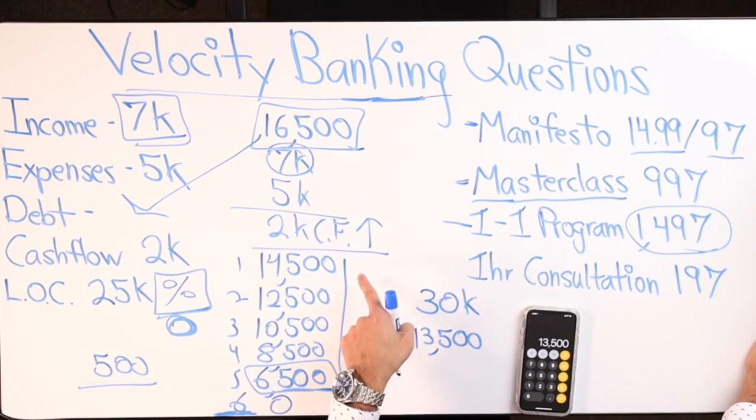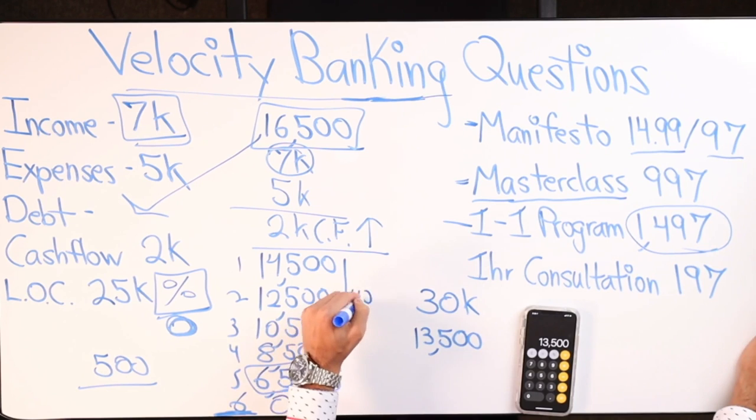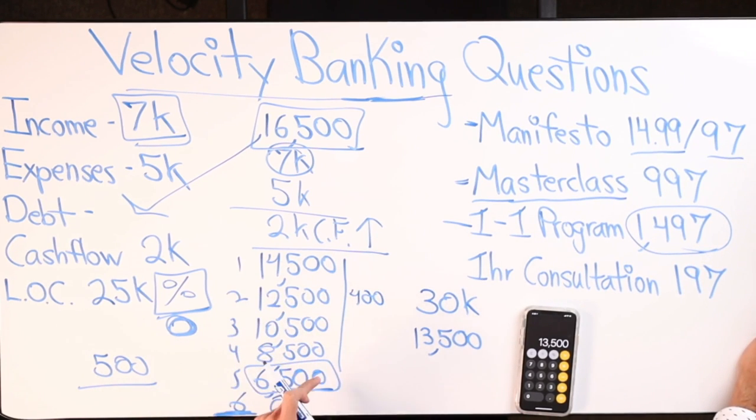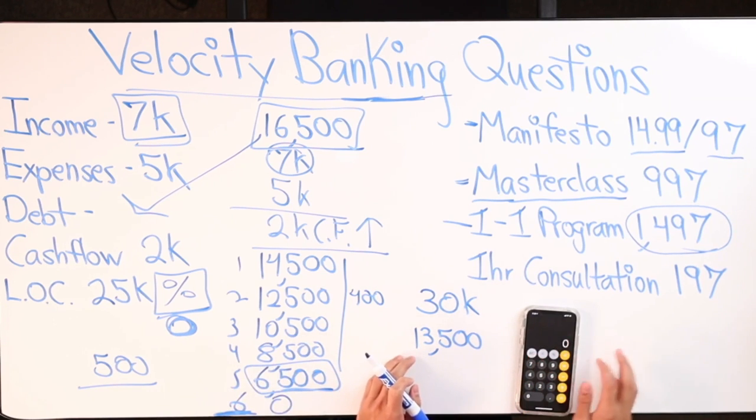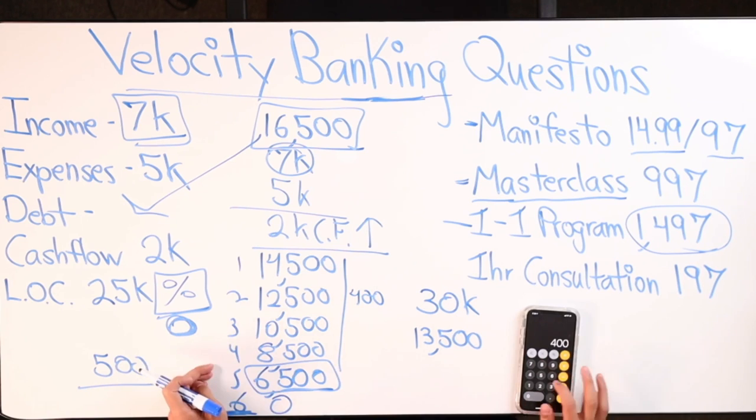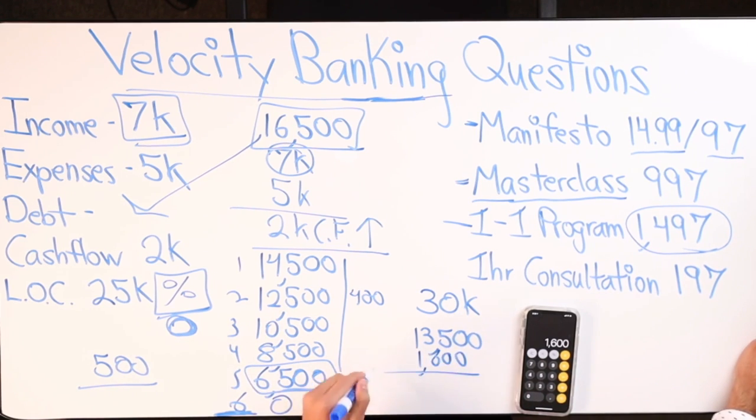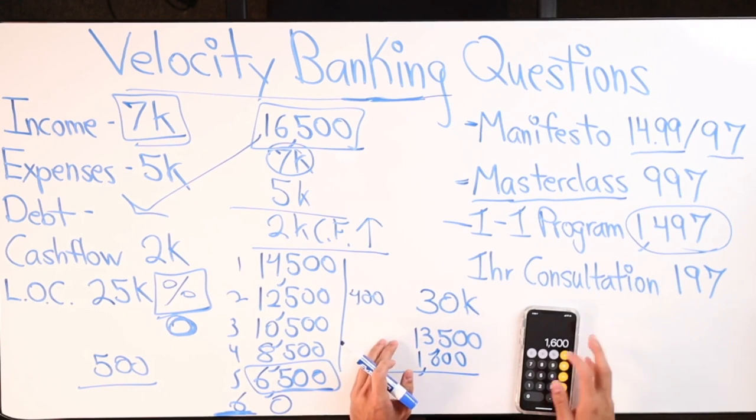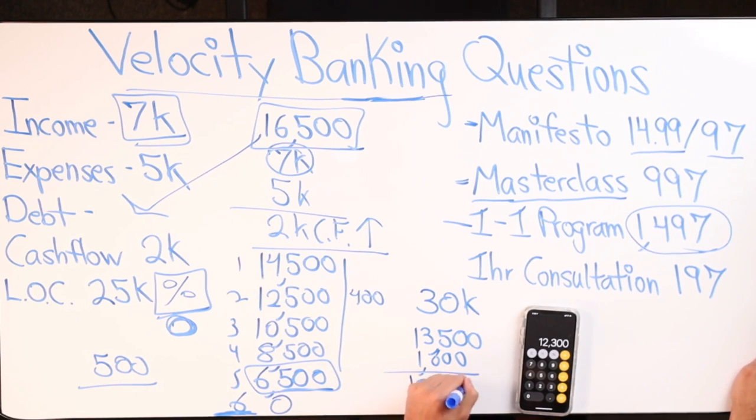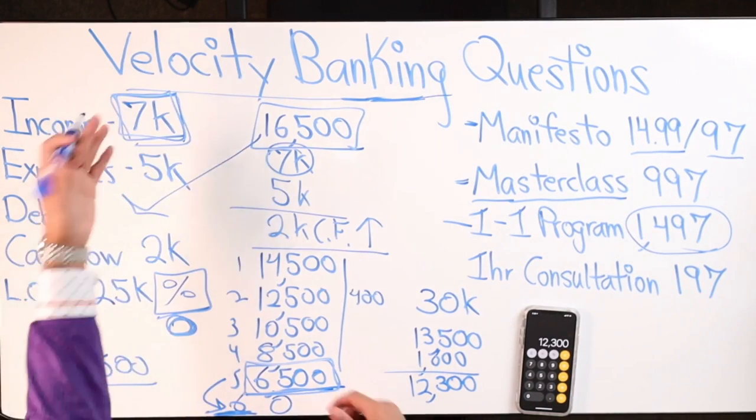Now you owe 16.5 on the line of credit, 13.5 on the car. You satisfied the month's payment that you made the chunk in. Then for the following months two, three, four, and five, let's say the car payment is $400 a month. So that's four payments of $400, minus 1600. Say $400 went towards interest, so 13.5 minus 1200, now you're left with 12.3.